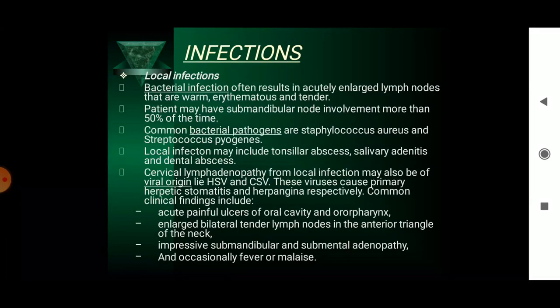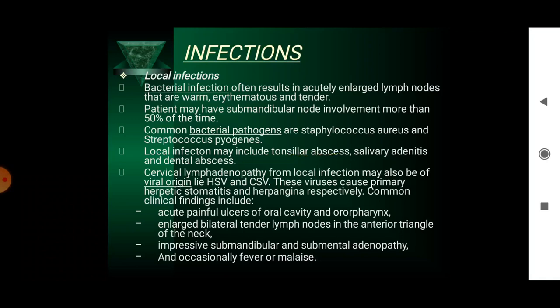Local bacterial infection most often results in acutely enlarged lymph nodes that are warm, erythematous and tender. Patients may have submandibular node involvement more than 50% of the time. Common bacterial pathogens are Staphylococcus aureus and Streptococcus pyogenes. Local infections may include tonsillar abscess, salivary adenitis and dental abscesses.